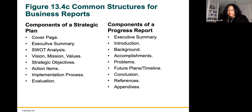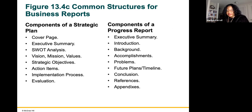Components of a strategic plan include cover page, executive summary, SWOT analysis, vision, mission and values, strategic objectives, action items, implementation process, and evaluation. Components of a progress report include executive summary, introduction, background, accomplishments, problems, future plans, timelines, conclusion, references, and appendices.